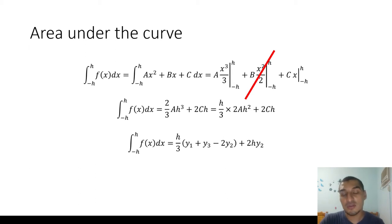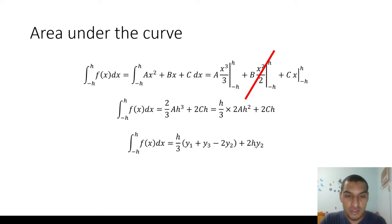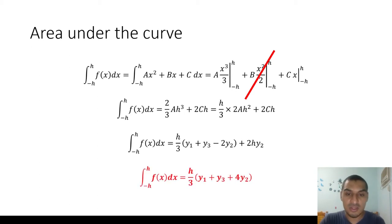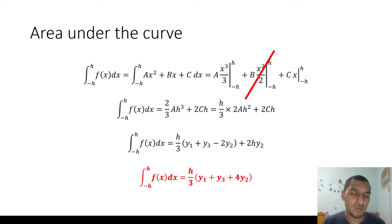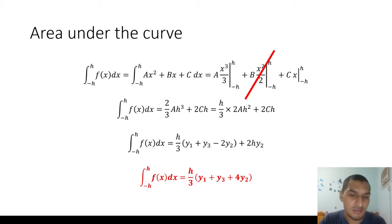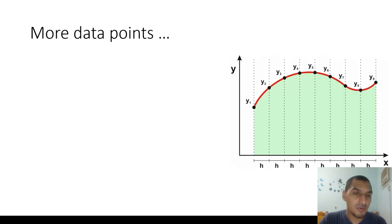By rearranging the equation, taking y2 inside the bracket and collecting common factors, we arrive at the final form: h/3 multiplied by (y1 + y3 + 4y2). This is the equation we're going to use. I wanted to go through the full derivation to understand how we got here, but this simple equation is what we substitute to get the area.